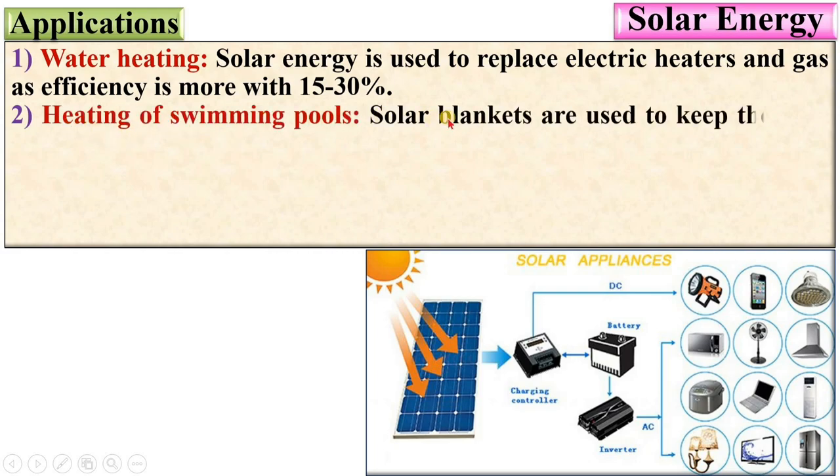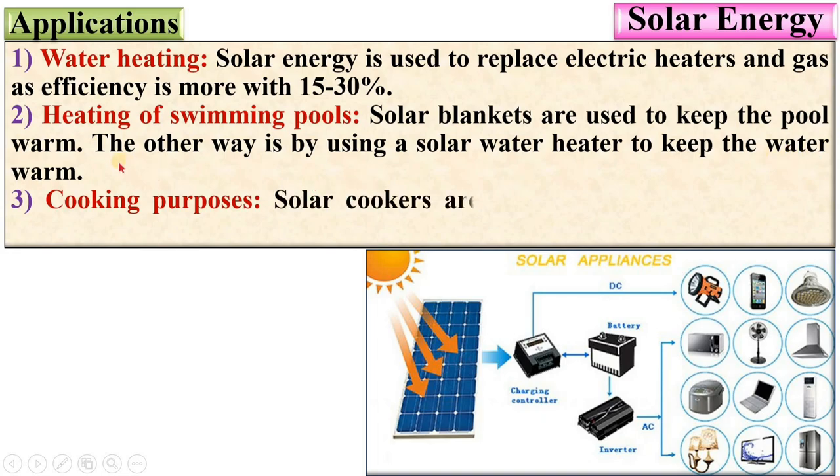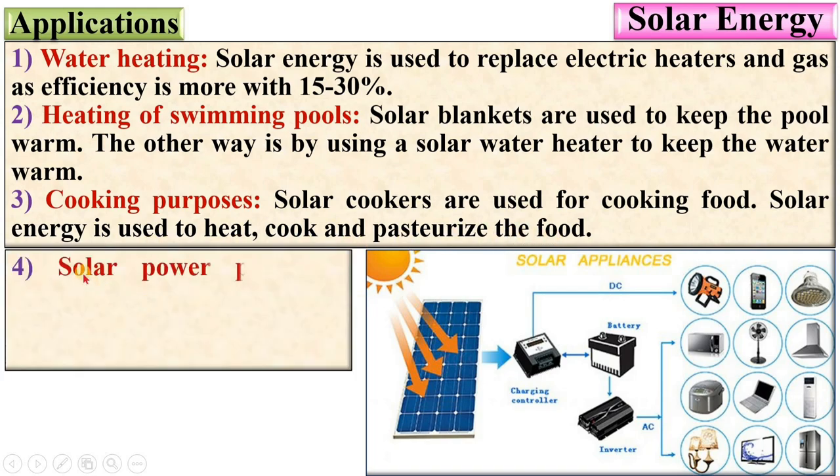Heating of swimming pools. Solar blankets are used to keep the pool warm. The other way is by using a solar water heater to keep the water warm. Third one is cooking purposes. Solar cookers are used for cooking food. Solar energy is used to heat, cook, and pasteurize food.